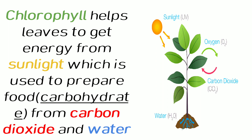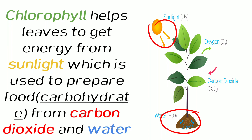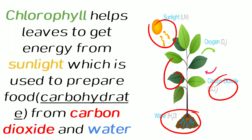Chlorophyll helps leaves to get energy from sunlight, which is used to prepare food — that is, carbohydrates — by using carbon dioxide and water. As you can see in the picture, green leaves take in solar energy. Water is absorbed by the roots and transported to all parts of the plant. These green leaves, which contain chlorophyll and water, absorb carbon dioxide from the atmosphere to prepare their own food — carbohydrates — and oxygen gas is released into the atmosphere.